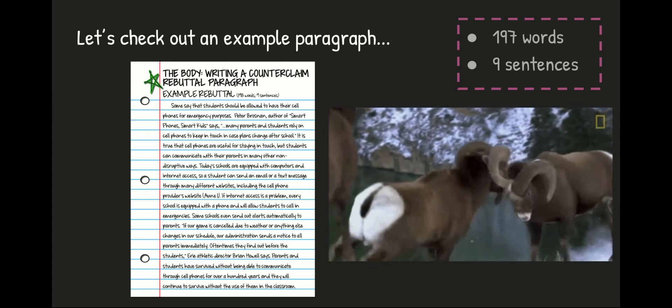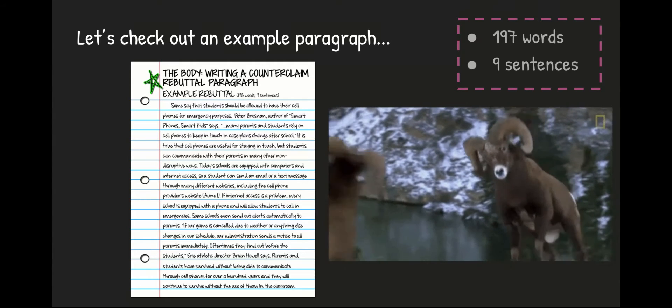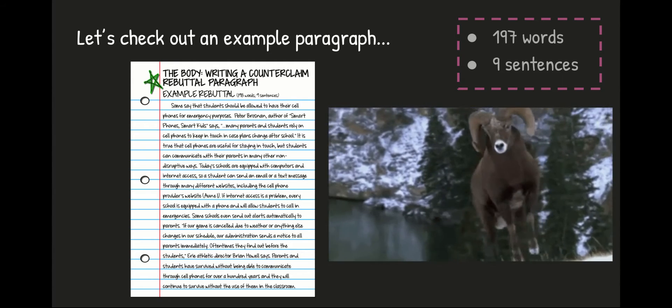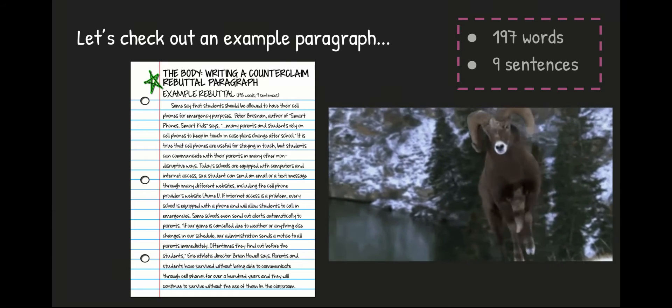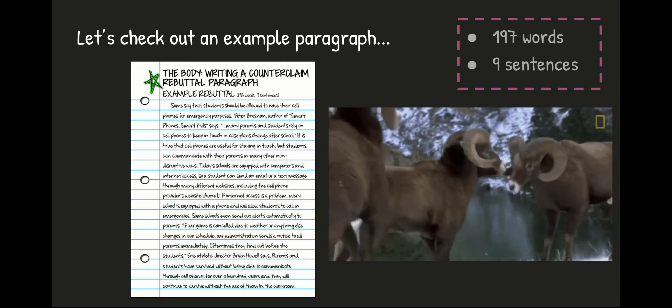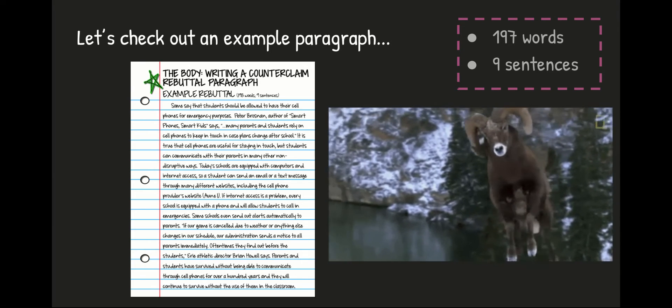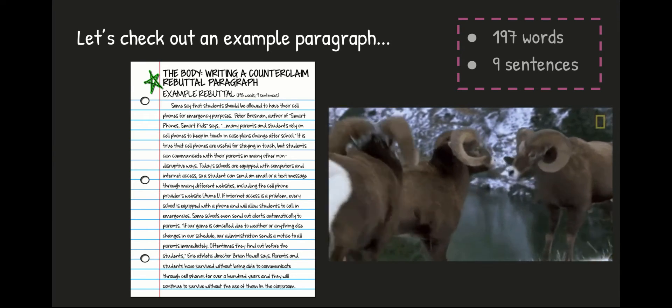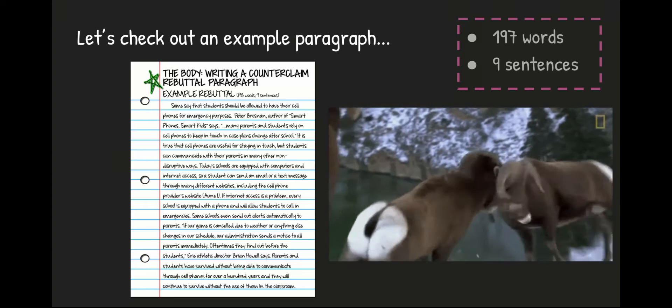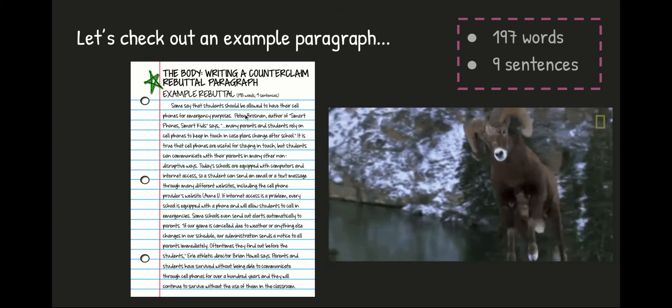Some say that students should be allowed to have their cell phones for emergency purposes. Right there, circle the words some say. You are acknowledging the counterclaim, but you're also saying only a few people agree with that. So they're using that transition words, some say, and they're saying that not a lot of people agree with this stance.